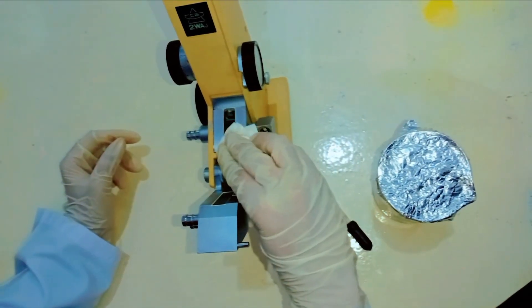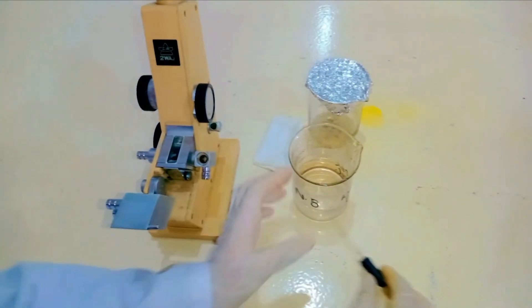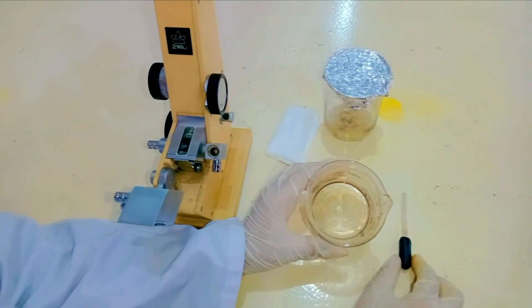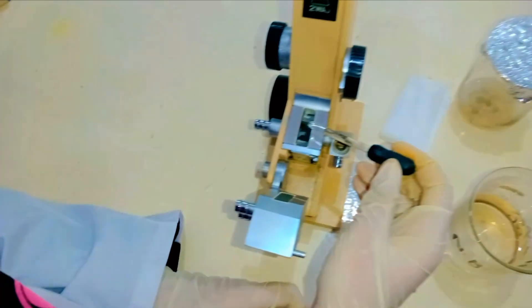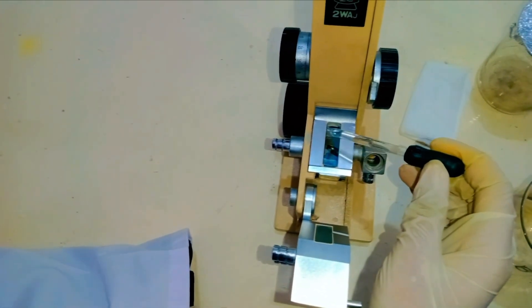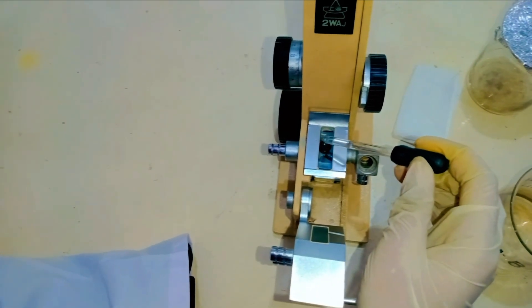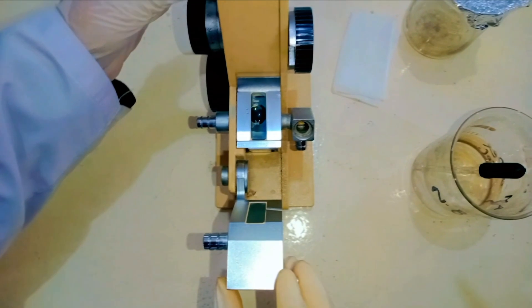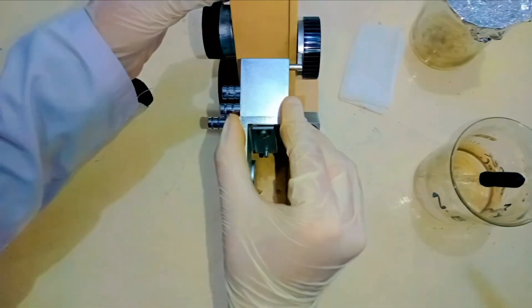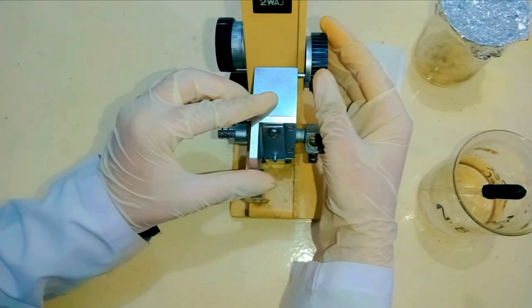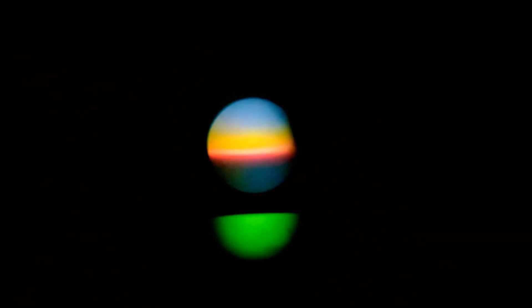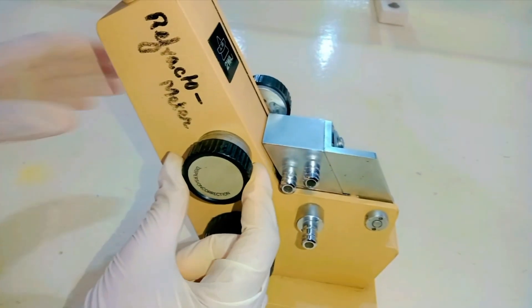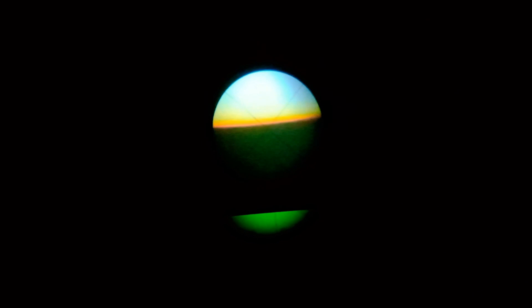To check whether the refractometer is working correctly or not, first perform the experiment with water for standardization. Take a dropper and add two to three drops of water onto the lower prism. Make sure not to touch the prism. Then lower the upper prism carefully so that the liquid spreads evenly between two prisms. Now open the light window and look through the eyepiece. If you notice any dispersion, use the dispersion correction knob until you have a clear dark and light boundary.